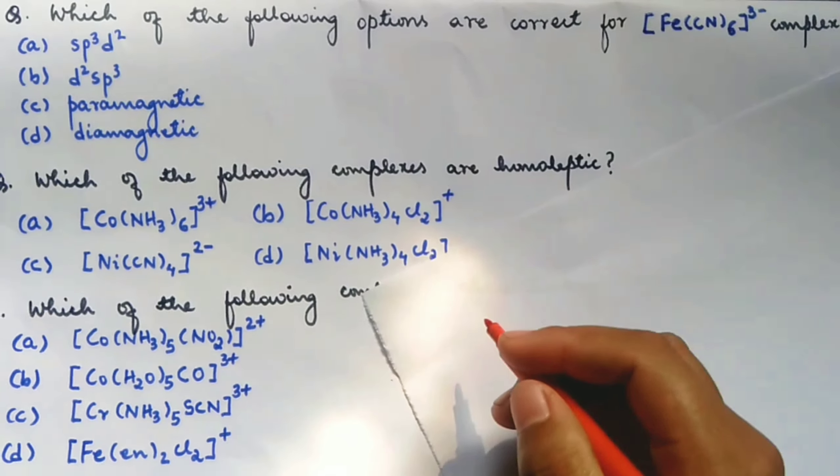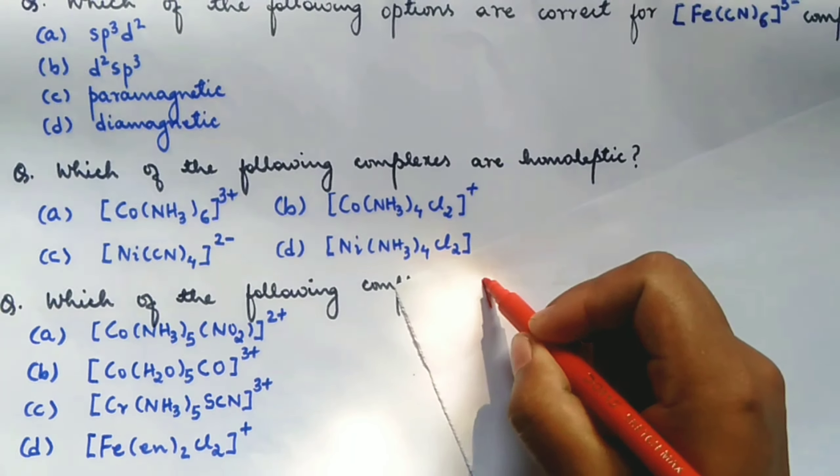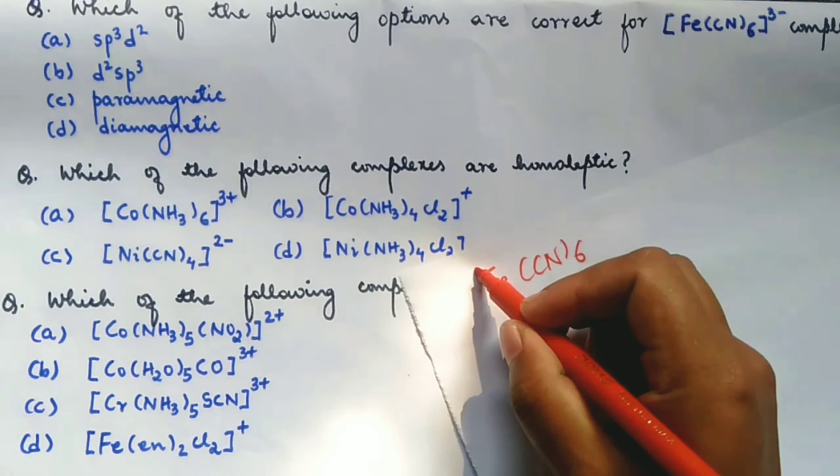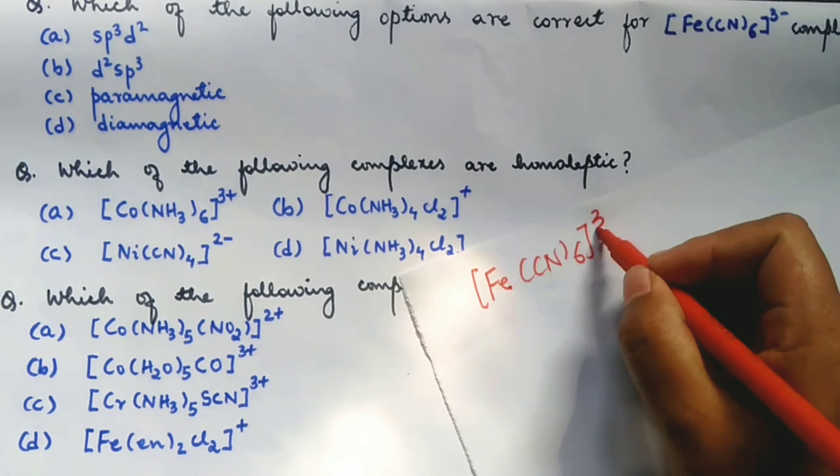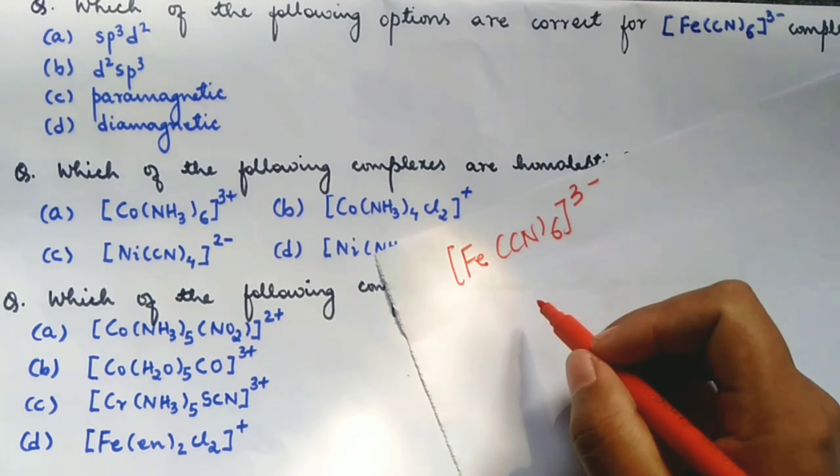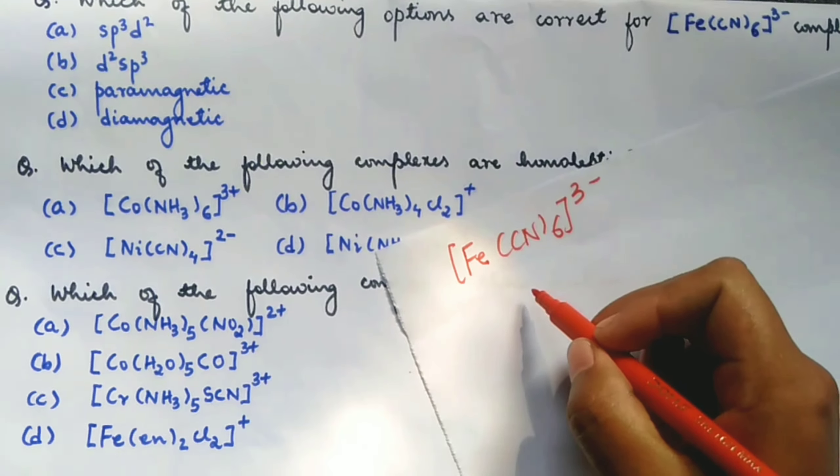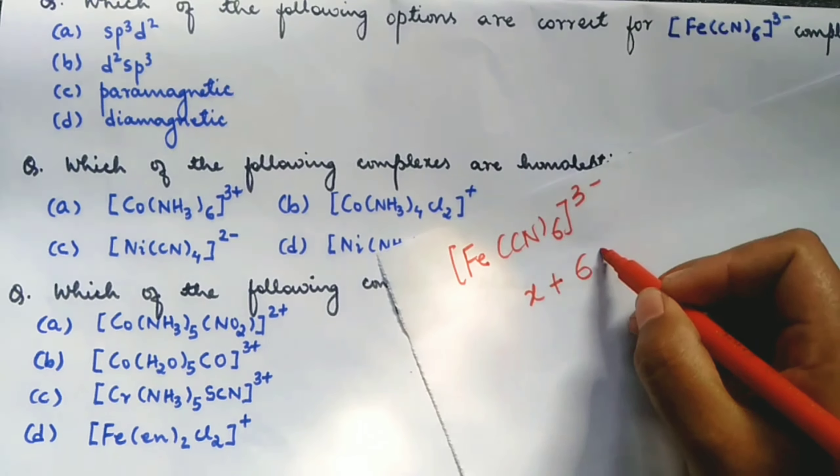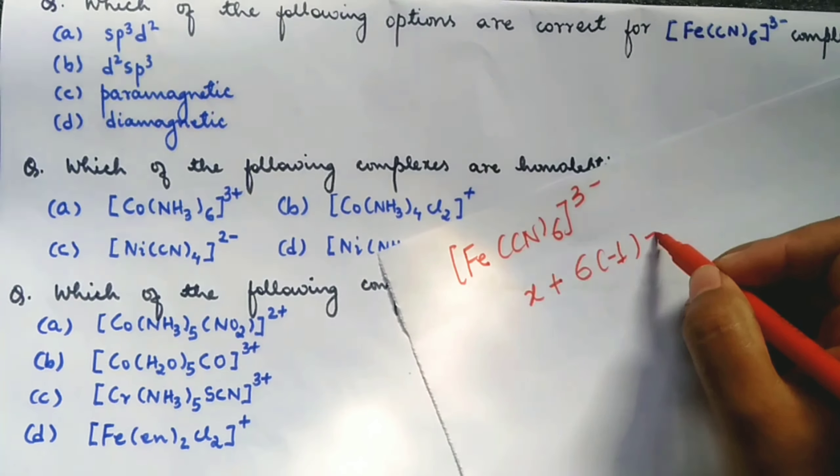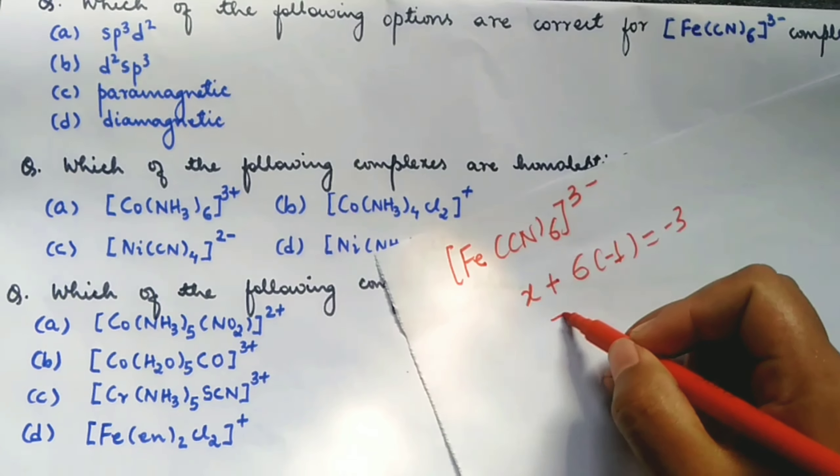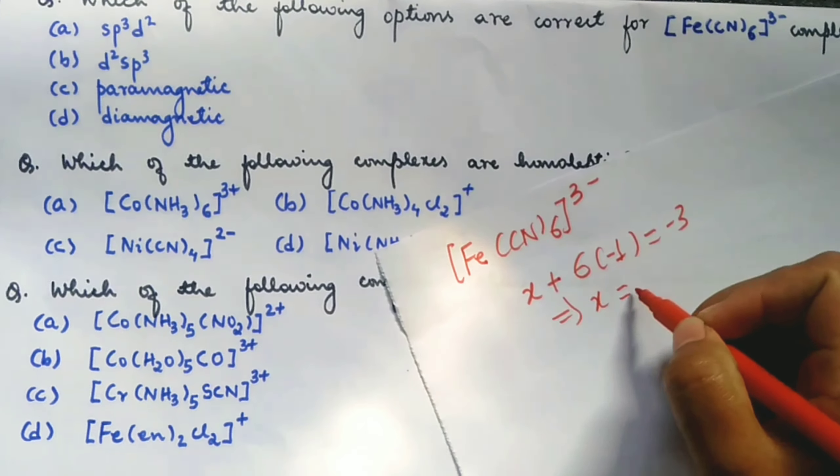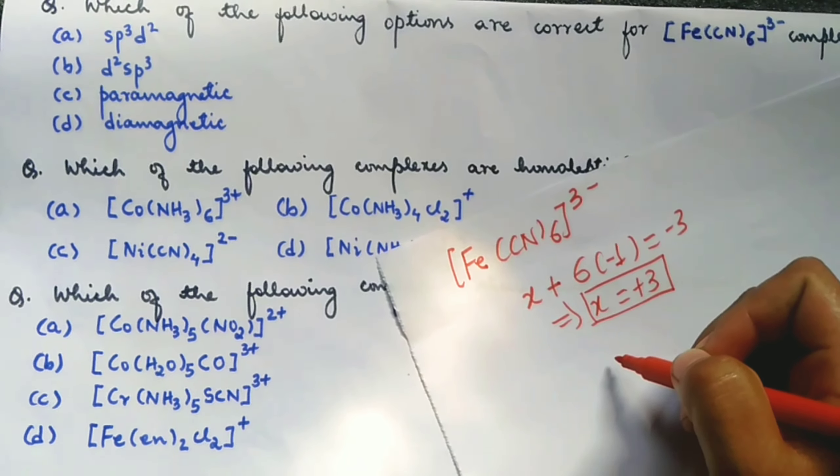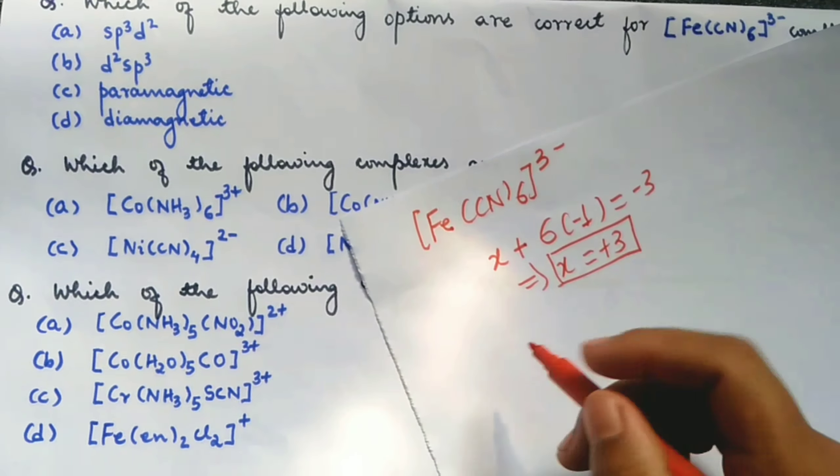Let's do this. We have this complex Fe(CN)6 3-. First, find the oxidation state of the central metal atom. Let that be x plus 6 into the charge carried by the ligand equal to minus 3. So from here, x is equal to plus 3, which means that iron is in the plus 3 oxidation state in this complex.